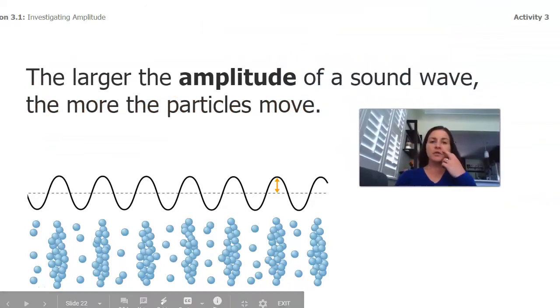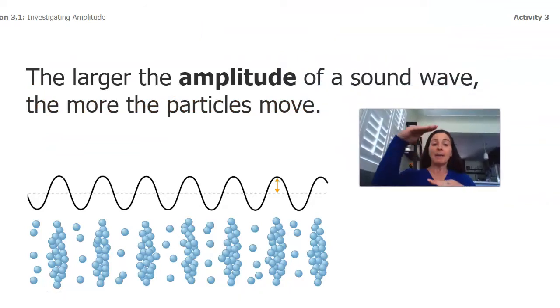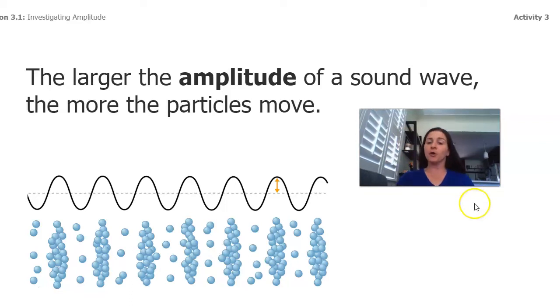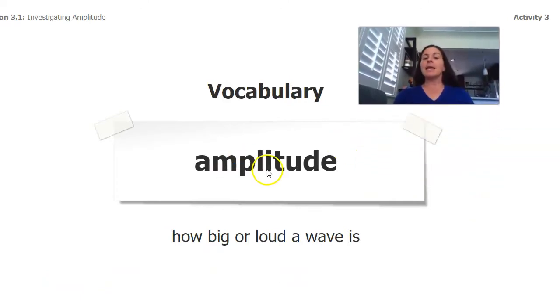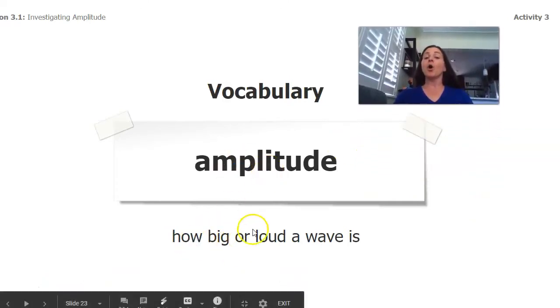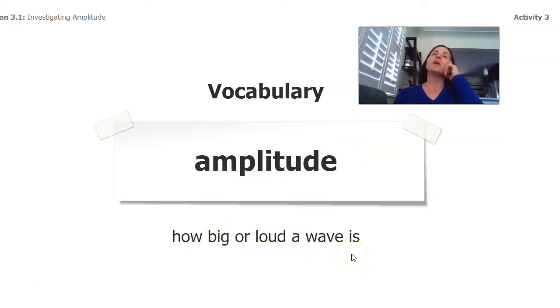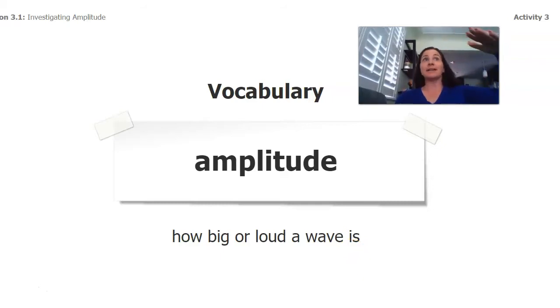And so that leads us to a conclusion. The larger the amplitude of the sound wave, the more particles move. So now we have a vocabulary word, amplitude, how big or loud a wave is. Okay. So that makes me think amplitude is both how big a wave is and how big it is, is how loud it is. So if the amplitude is greater, the wave is bigger and the sound is louder. I'm going to think of that like a big noise. If a big noise happens, it's really loud and I can visualize those waves being really tall.